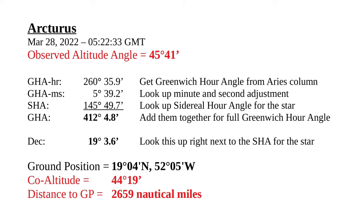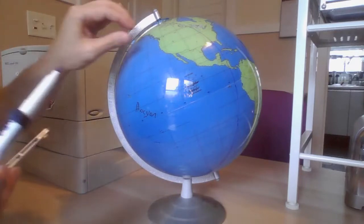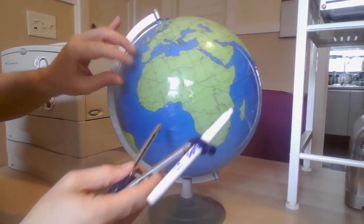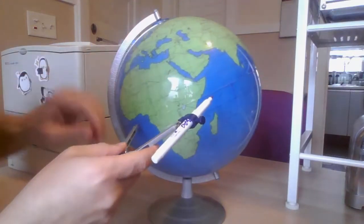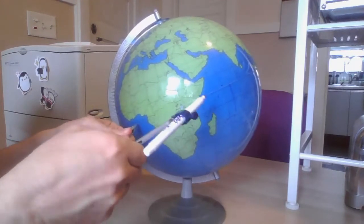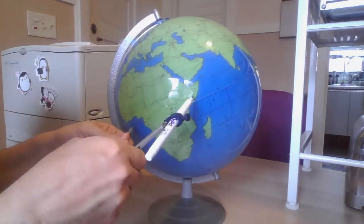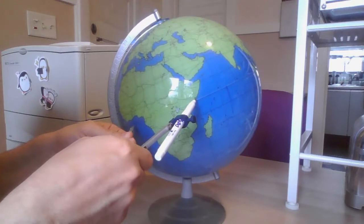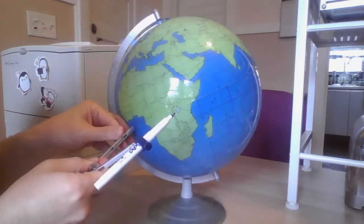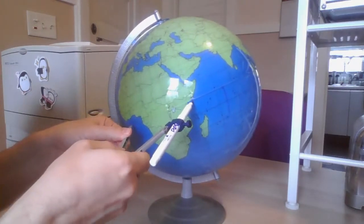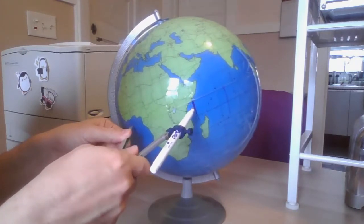Next I'm going to do Arcturus, which has a not quite as large a circle in this case. The altitude angle is 45 degrees 41 minutes, so our co-altitude is just a little bit more than 44 degrees. We'll size that up again like we did with the previous one, starting at zero longitude and measuring out to just a little less than 45 degrees — very conveniently one of our longitude lines. That's about right.